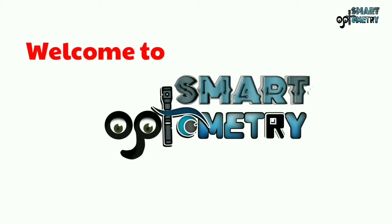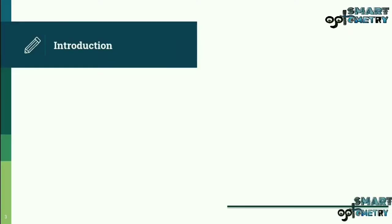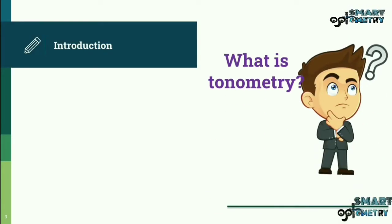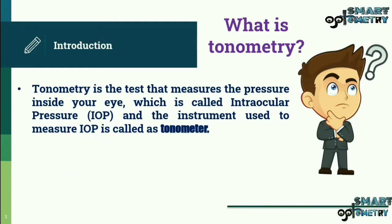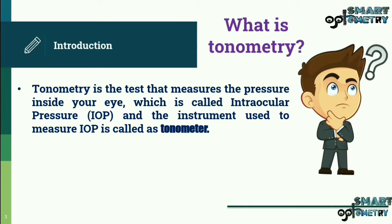Hello everyone. In this video we look into tonometry and IOP measurement. Tonometry is the test that measures the pressure inside your eye, which is called intraocular pressure (IOP), and the instrument used to measure IOP is called a tonometer.